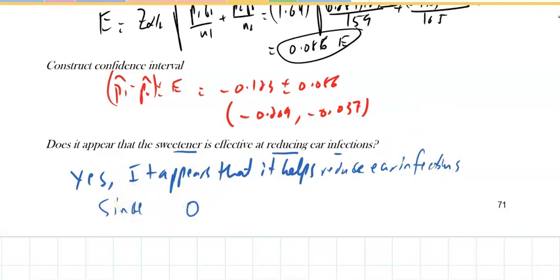Since zero is not in the interval, if zero is in the interval, we say they're the same. Since zero is not in that interval, that means that medication made a difference.